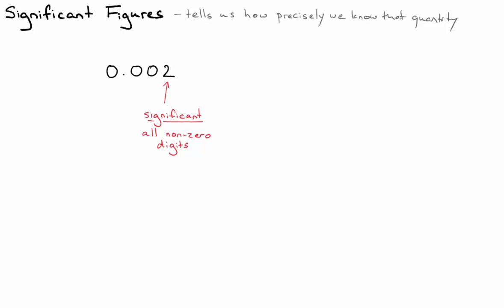These zeros over here, on the other hand, are not significant. These ones are not significant because they are only used to locate the decimal point. We could have said it's two millimeters, in which case, and from that we can see that those zeros before the two are not really important to tell us how well we know the number.